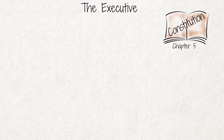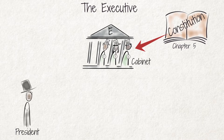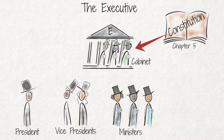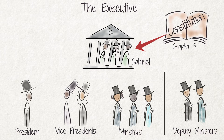Chapter 5 of the Zimbabwean Constitution explains how the executive is formed and how it functions. The national executive is made up of the cabinet, which includes the president, the vice presidents, and the ministers of each government department. Deputy ministers are not part of the cabinet, but they are also part of the executive.